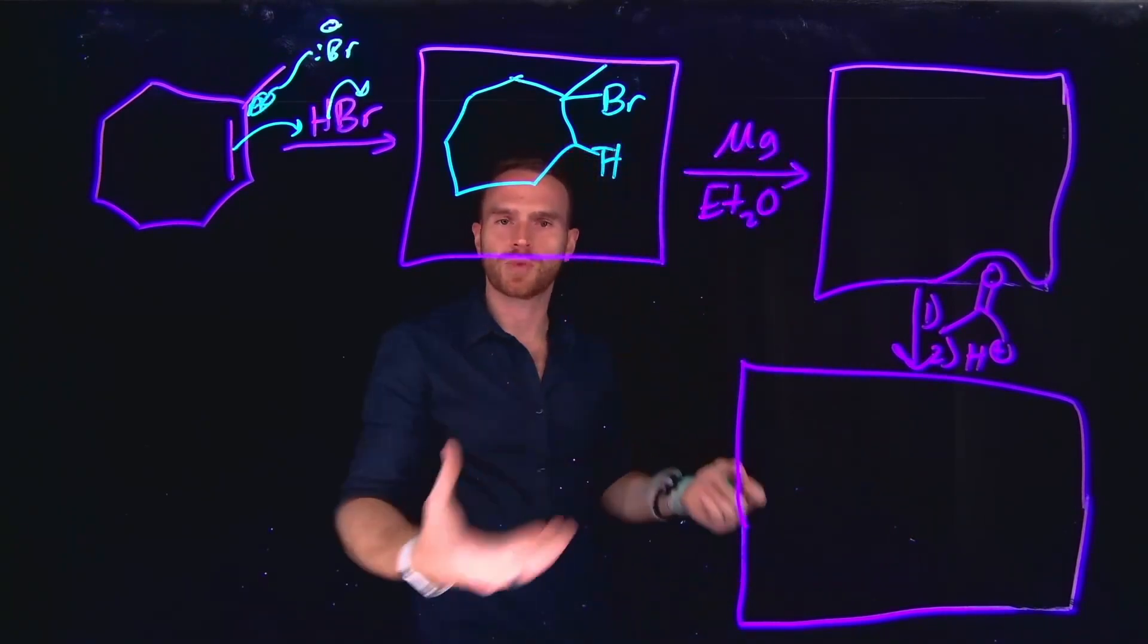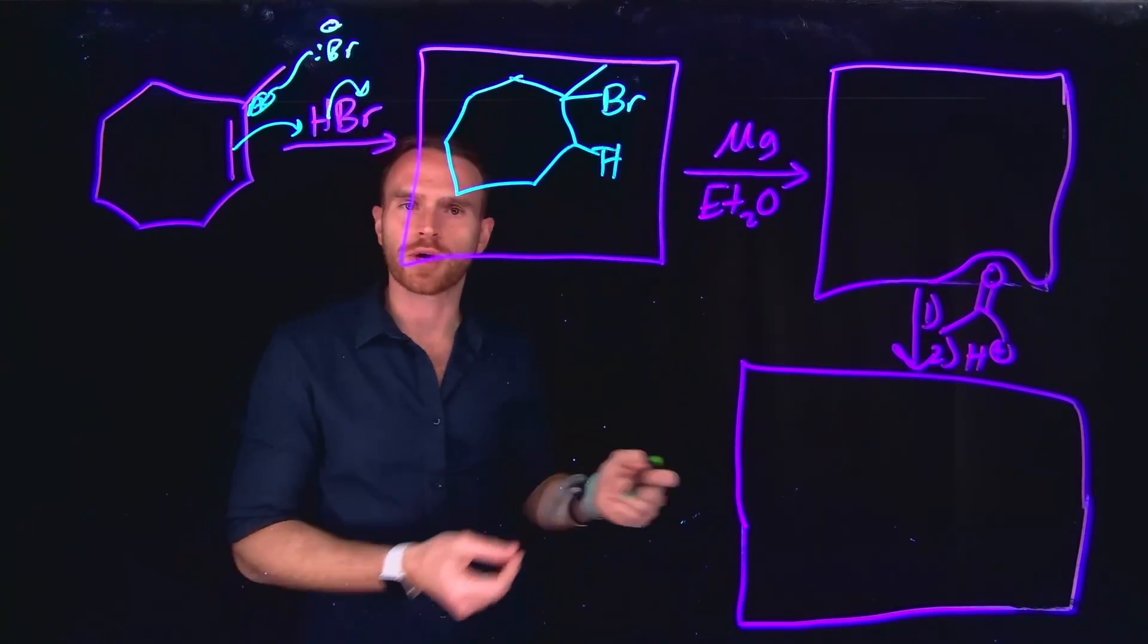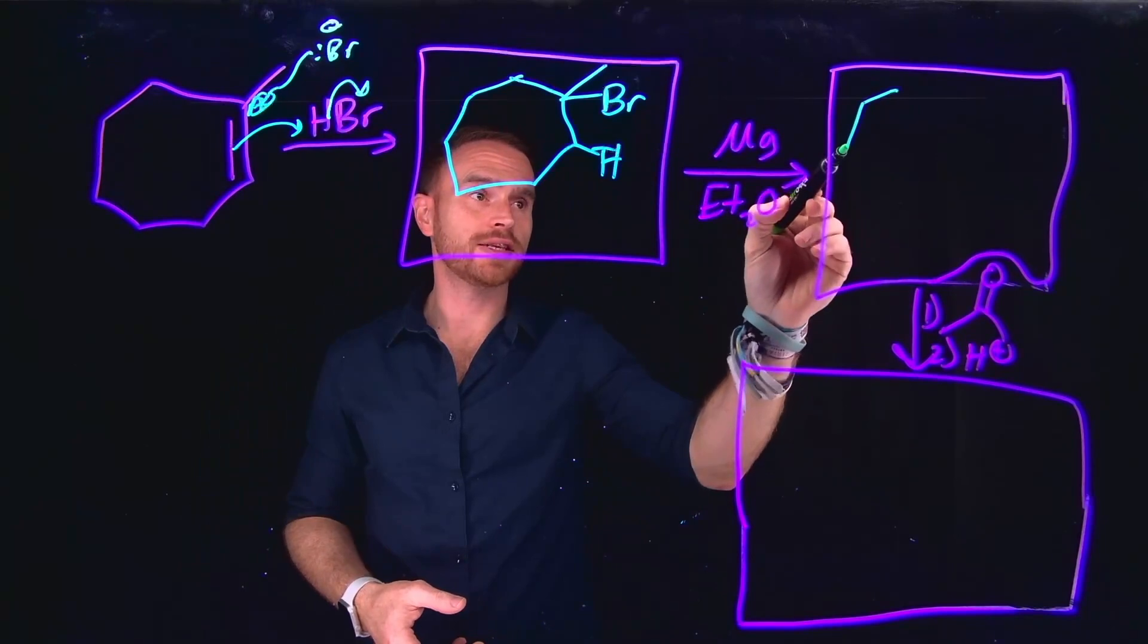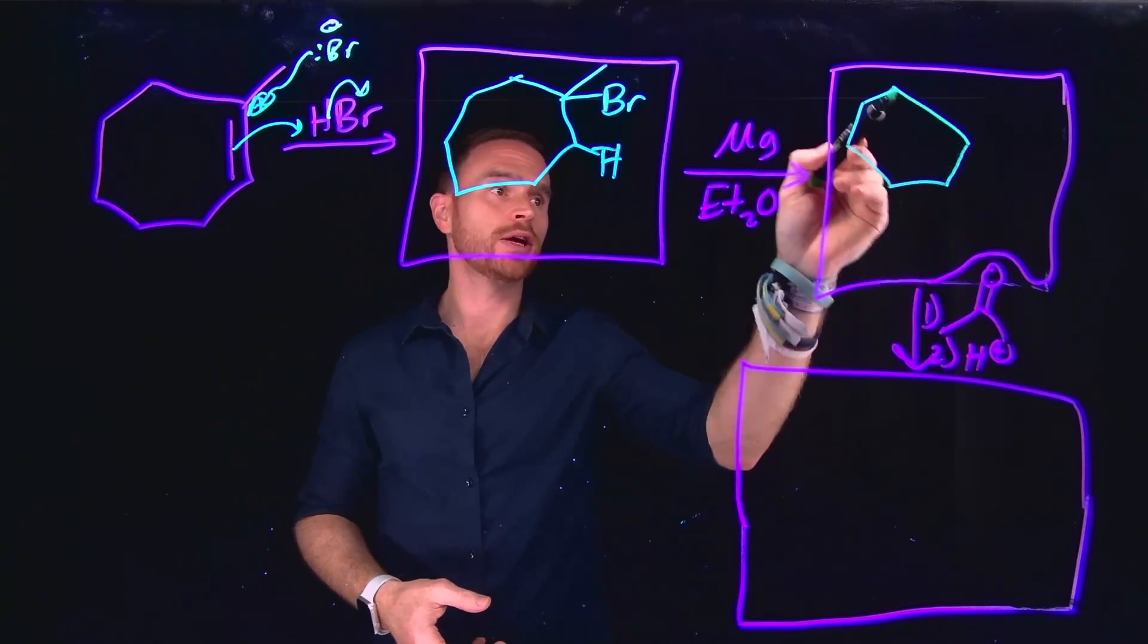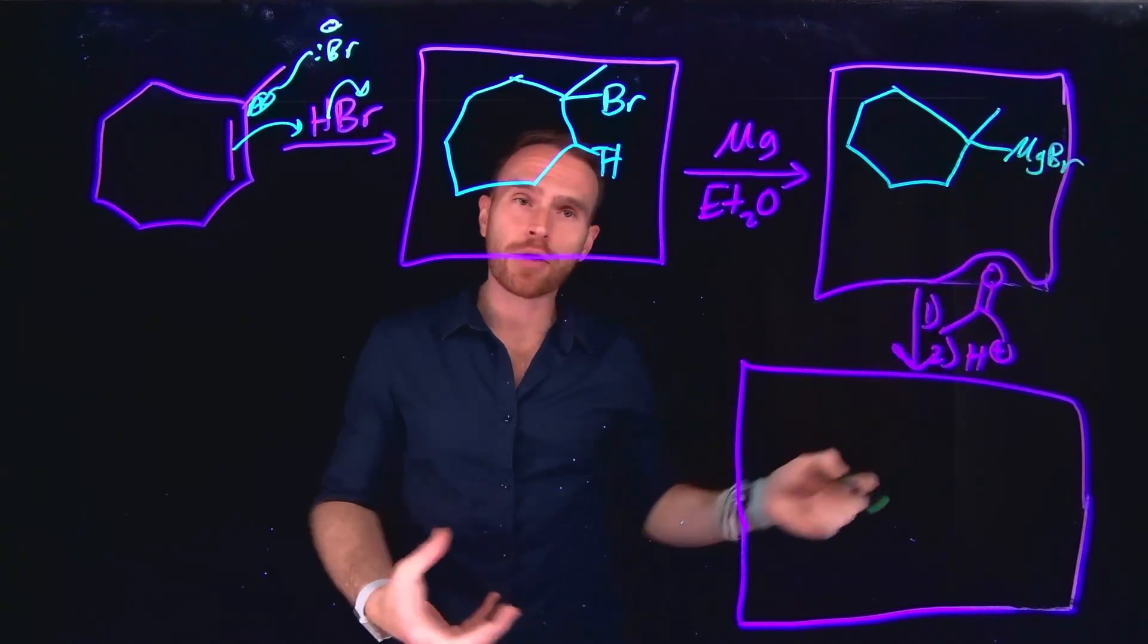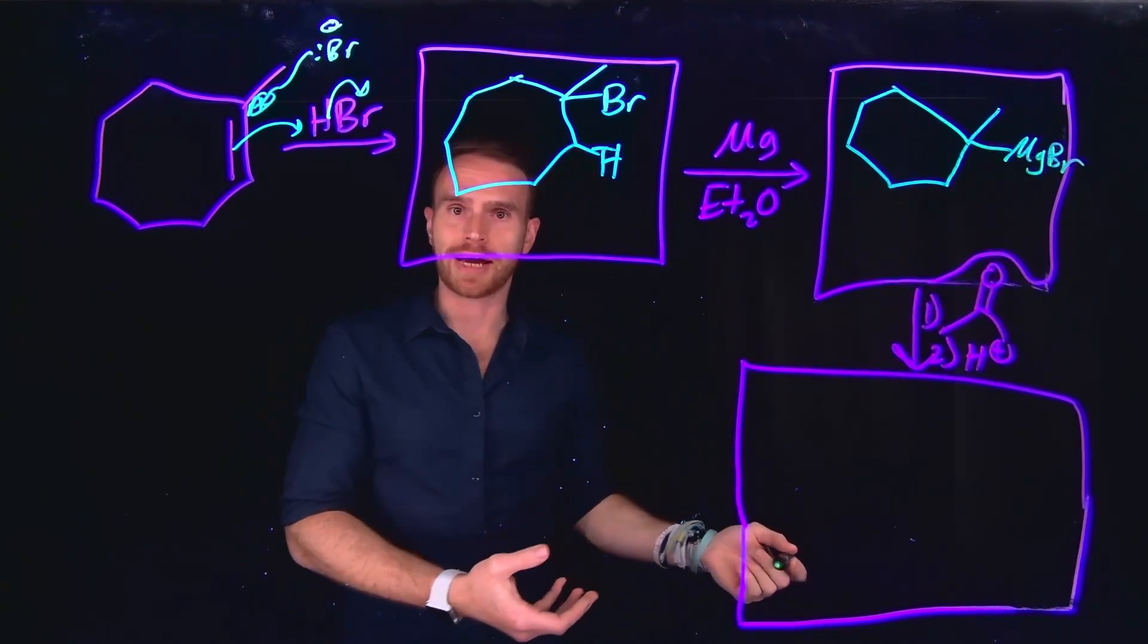And then from here, one of the reactions we learned about today is forming Grignard reagents. So the magnesium will insert itself into a carbon halide bond, except for fluorine, and this will generate, and this is actually how you generate Grignard reagents. So the Grignard reagent will be formed at that position, allowing for us to use this Grignard reagent in subsequent nucleophilic attack reactions.